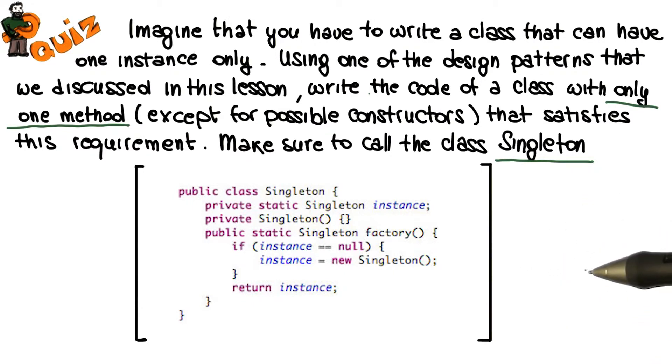So with this code, you're guaranteed that other classes cannot bypass the factory method because the default constructor is private, and that the factory method will create one and only one instance of the class, which is exactly what our requirements were.